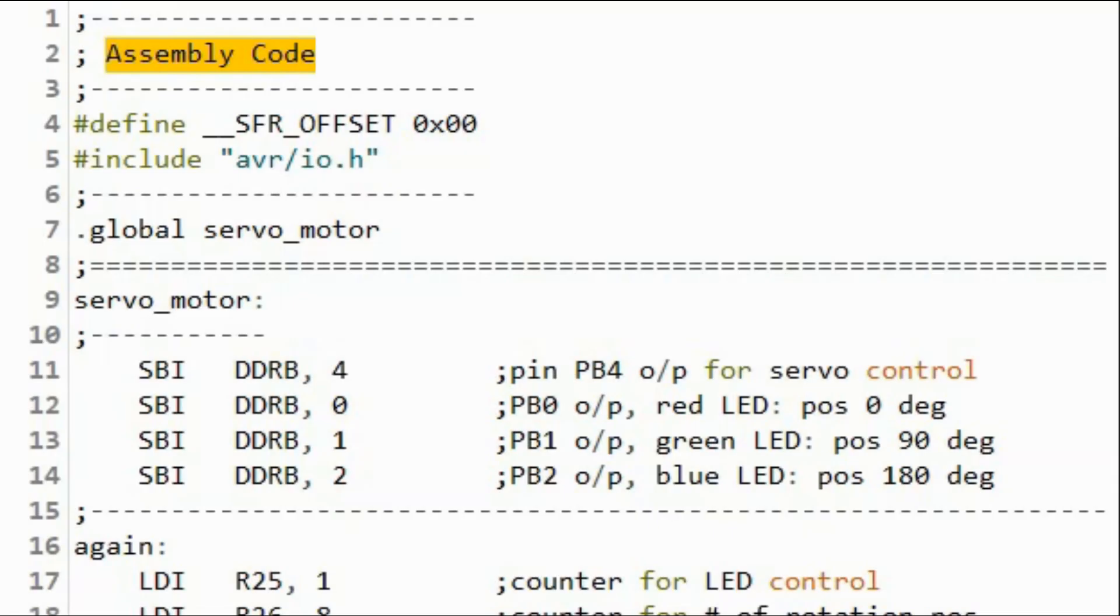A quick look at the assembly code. We initialize port B for output. So here, pin PB4 is output for servo control. And pins PB0, 1, and 2, we have the red, green, and blue LEDs are connected to indicate the servo position at position 0 degrees, 90 degrees, and 180 degrees.